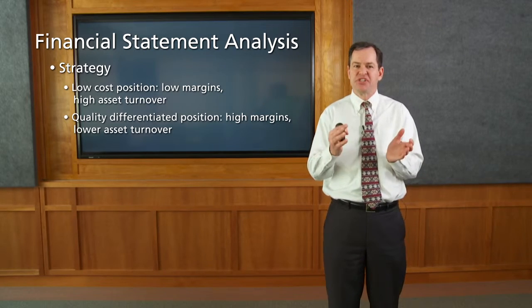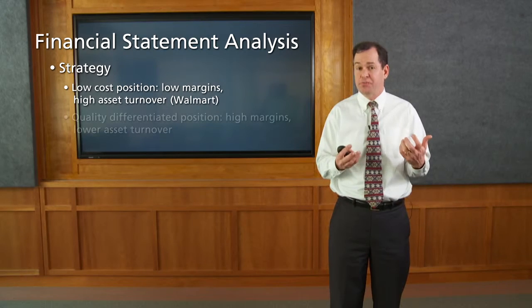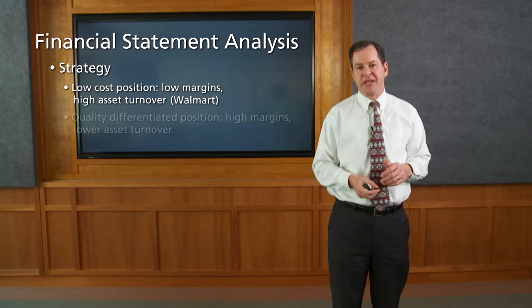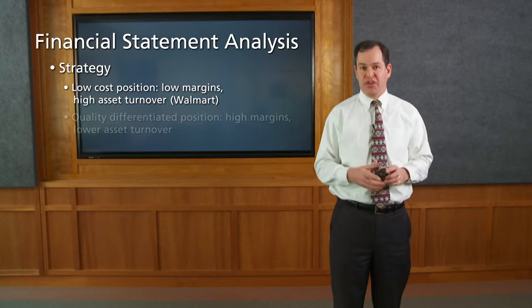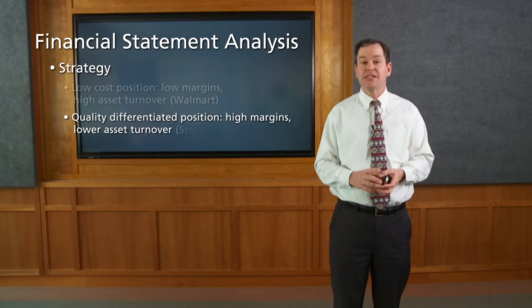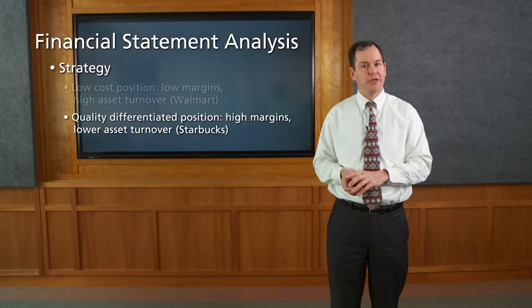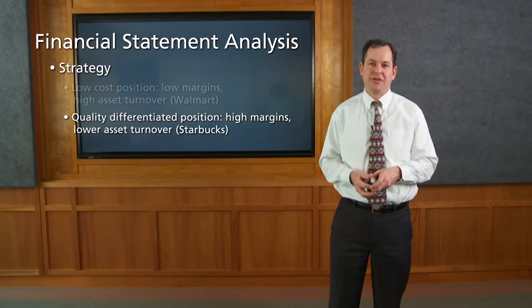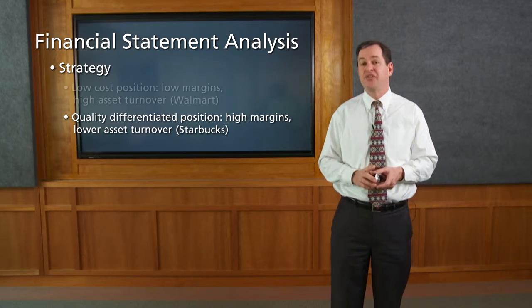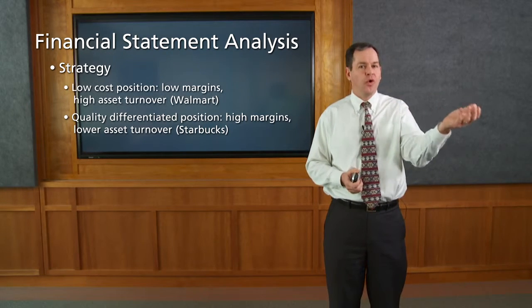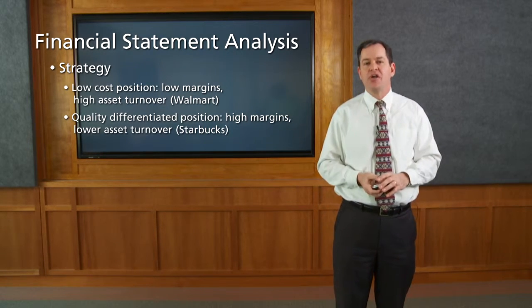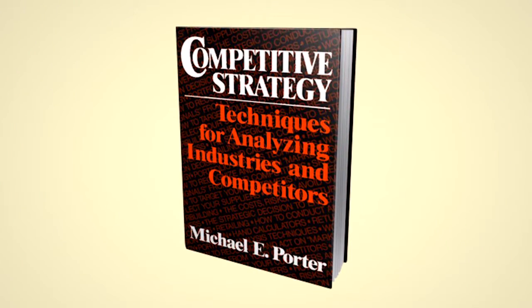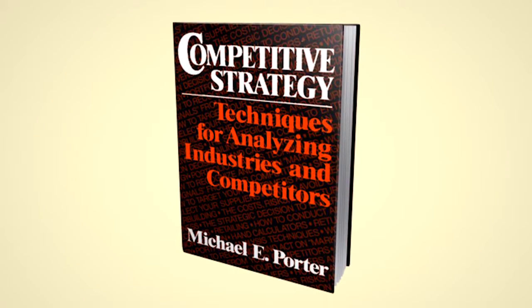If we think of a firm pursuing a low cost position strategy, we think of Walmart — offering products at everyday low prices, competing with expensive department stores. For a firm offering a quality differentiated product, Starbucks comes to mind — charging premium prices for premium coffee, while McDonald's or Dunkin' Donuts serve customers willing to spend less. I don't view Walmart and Starbucks as competitors; I use them to illustrate two different strategies, which are the two generic strategies Michael Porter refers to in his book Competitive Strategy — one of the most famous books on strategy.